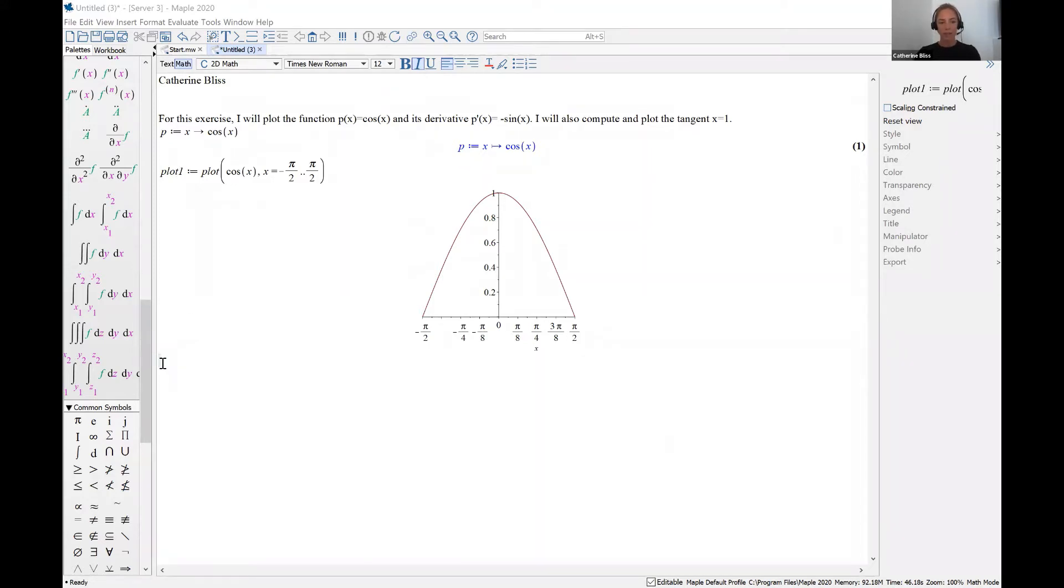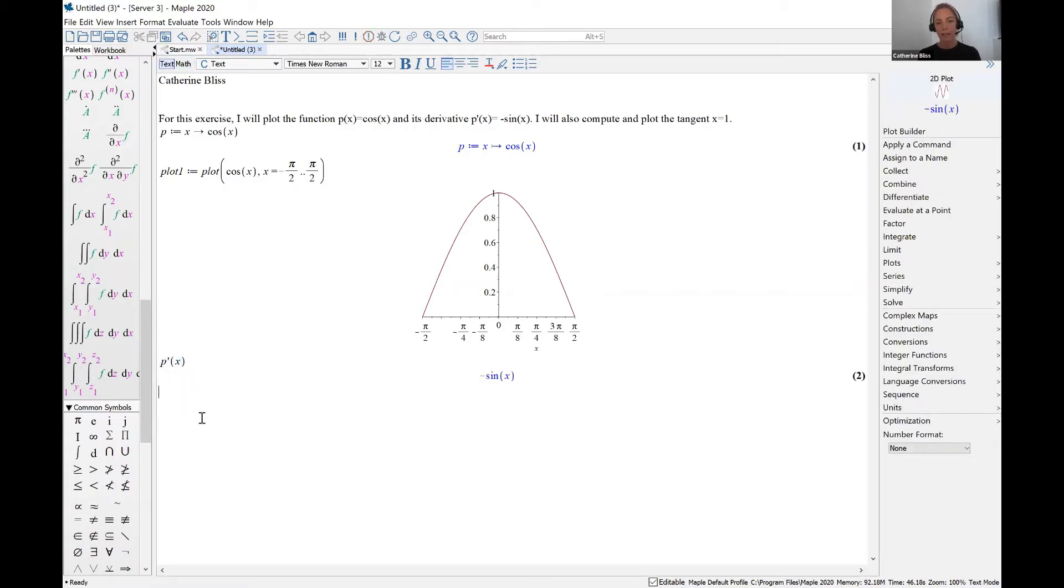Next, let's find the derivative. The derivative can be found by typing the notation for derivative p prime of x, and indeed, that coincides with what we know is the derivative of cosine. The derivative of cosine is negative sine x.